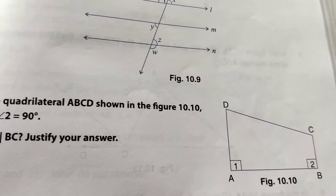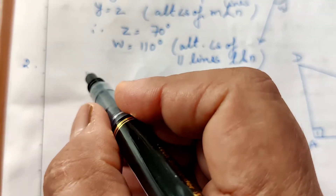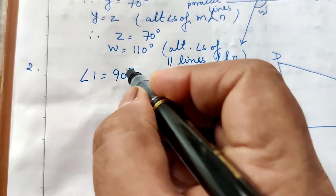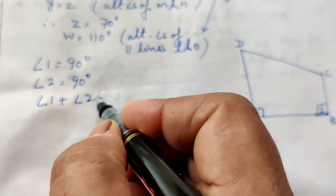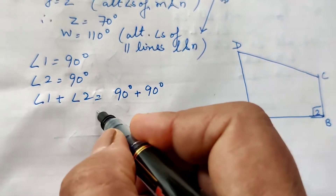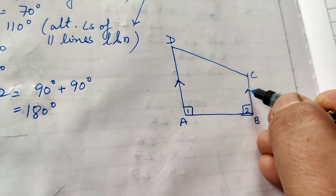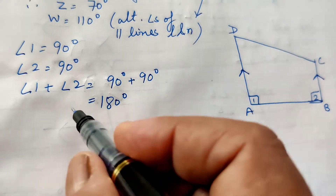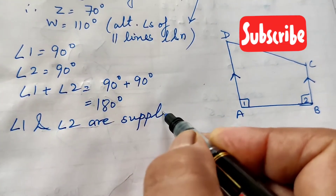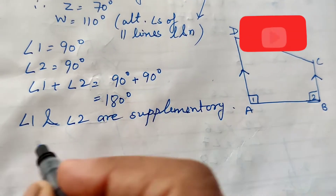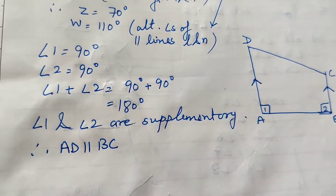Question 2: Angles 1 and 2 are supplementary angles. Since they are supplementary, AD is parallel to BC, because when co-interior angles are supplementary, the two lines are parallel.